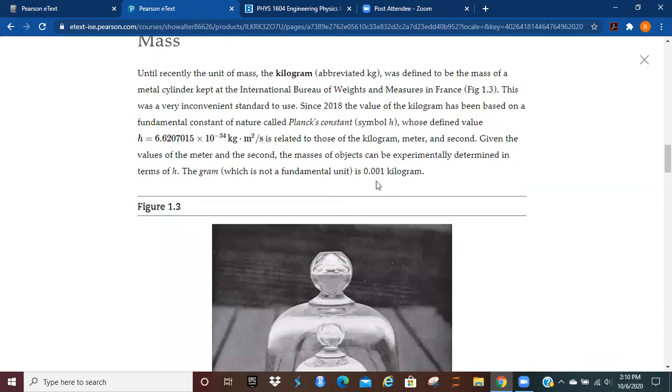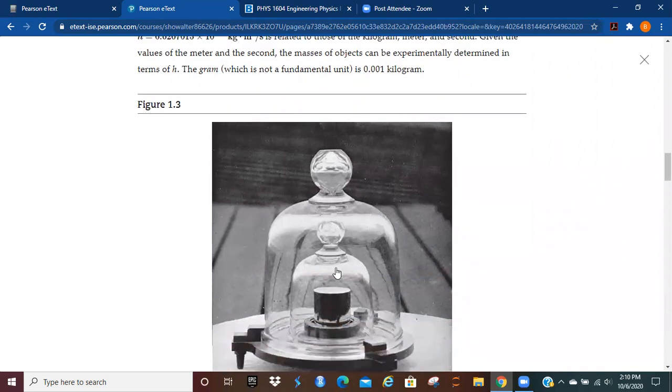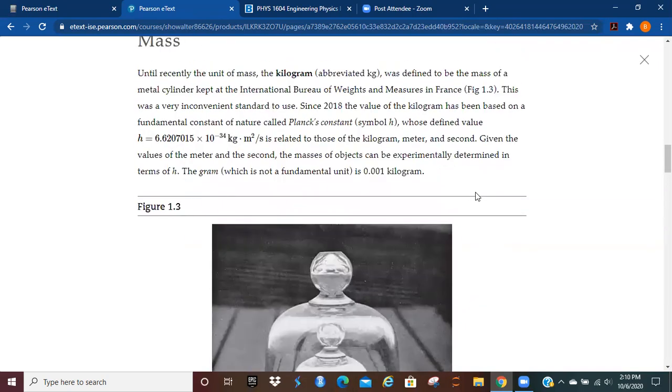When it came to mass, particularly the kilogram, it was defined to be the mass of a metal cylinder kept in the International Bureau of Weights and Measures in France. It's kept under glass, and that's kind of hard to use, kind of hard to compare. So since 2018, the value of the kilogram has been based on a fundamental constant of nature called Planck's constant. And that's a weight that relates kilograms, meters, and seconds.